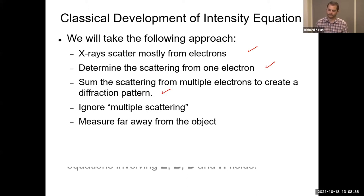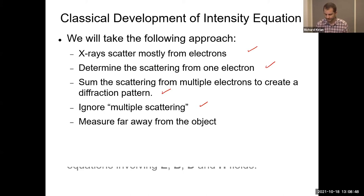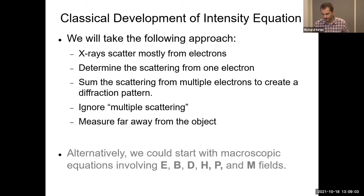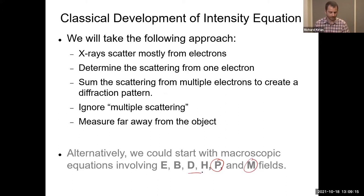X-rays for the most part scatter from electrons. We're going to develop the scattering from a single electron — Thompson scattering — and then superimpose scattering from multiple electrons to get the diffraction pattern through coherent interference. The key assumptions are: we ignore multiple scattering (weak scattering, which is almost always true for hard x-rays), and we measure far away from the target (the far-field approximation). We could also start with macroscopic fields including polarization and magnetization, but instead we'll construct diffraction one electron at a time.